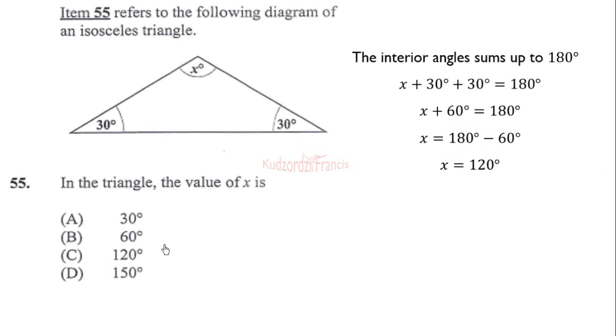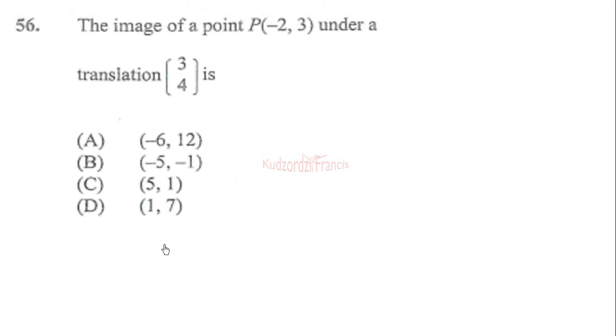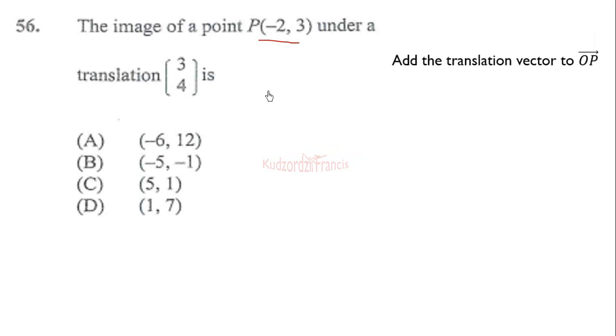Now let's proceed with question 56. The image of point negative 2, 3 under translation (3, 4) is? To find the image of this point under this translation, we add the translation vector to the position vector corresponding to P. One way is to write P as a column vector. Another way is to do it in point form: 3 minus 2, 4 plus 3, which gives you 1, 7. So you write this as a point to get (1, 7).